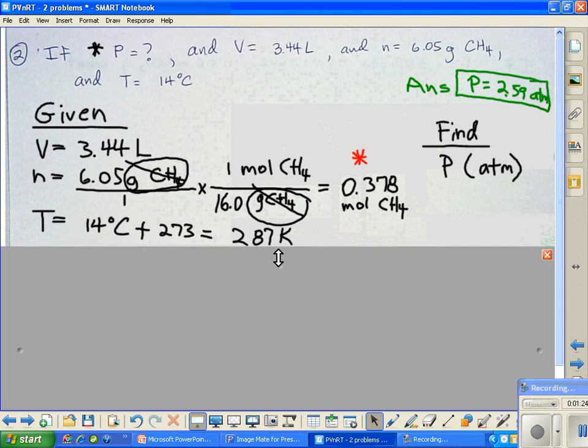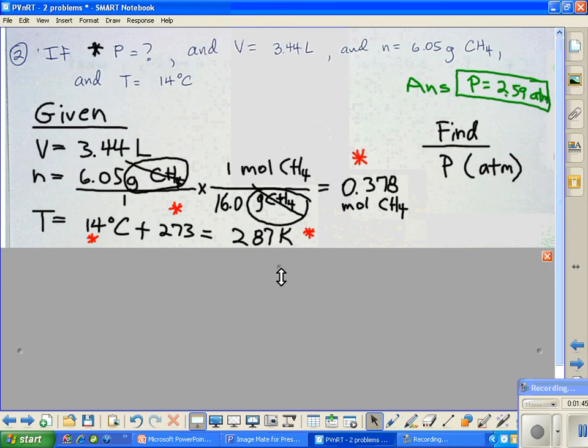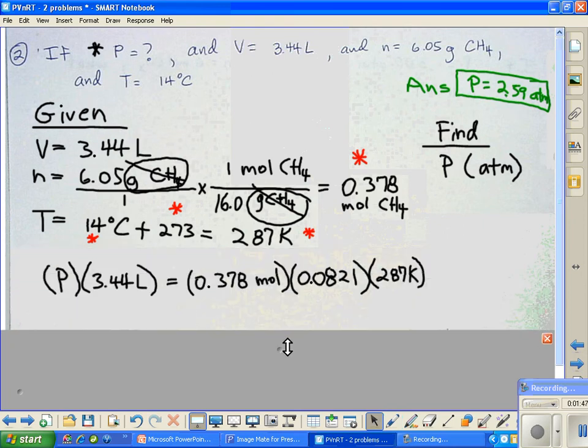So let's go on down to temperature. Well, temperature was in degrees centigrade. That's what was given. So we had to add the 273 to get our number of 287 Kelvin. And that can be used in our calculation. So now we are ready to run this thing.